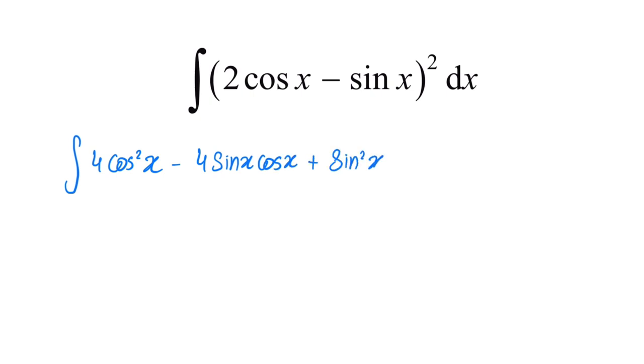Then we can use that cosine squared equals half plus half cosine 2x, and sine squared x is equal to half minus half cosine 2x.